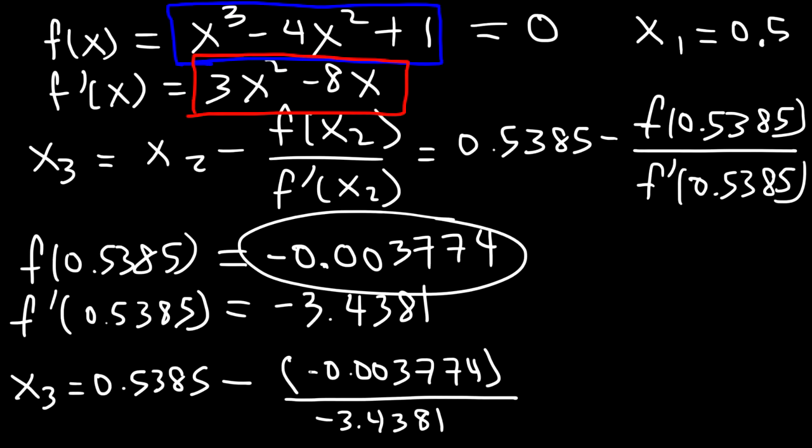So x3 shouldn't be too far away from x2. Now, these two negative signs will cancel. So this is going to be 0.5385 minus 0.003774 divided by 3.4381. So you should get this answer, 0.5374, which is very close to x2.